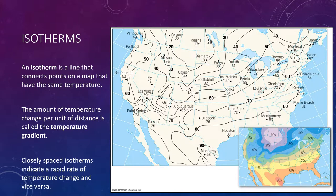This figure illustrates how isotherms are drawn on a map. Notice that most isotherms do not pass directly through the observing stations, because the station's readings may not coincide with values chosen for the isotherms. Only an occasional station temperature will be exactly the same as a value of the isotherm, so it is usually necessary to draw the lines by estimating the proper position between stations.